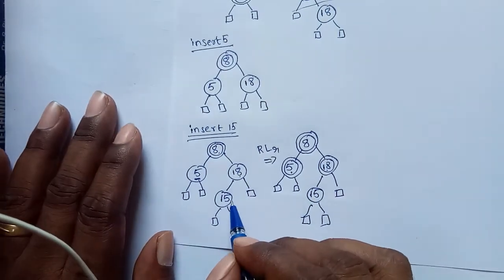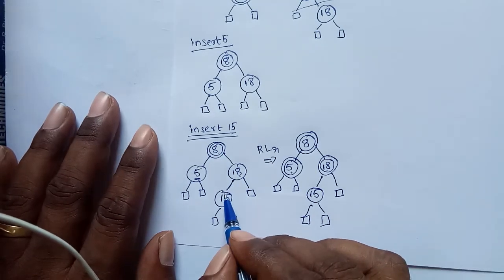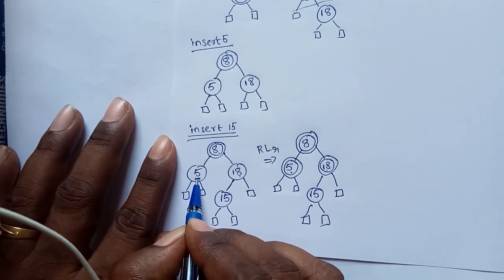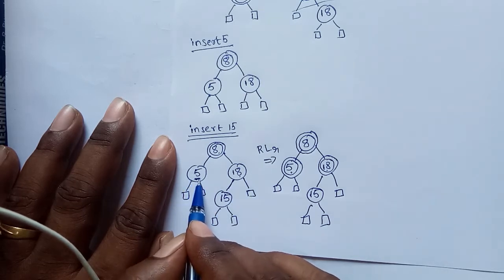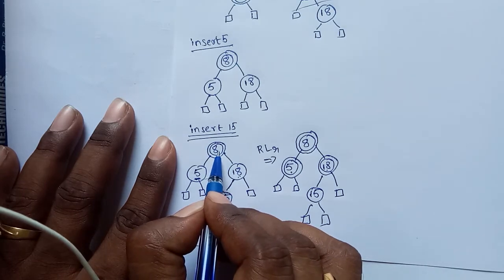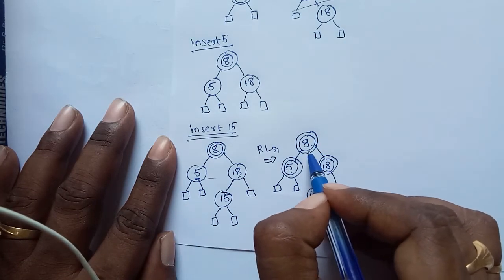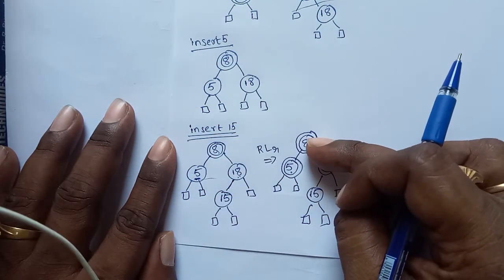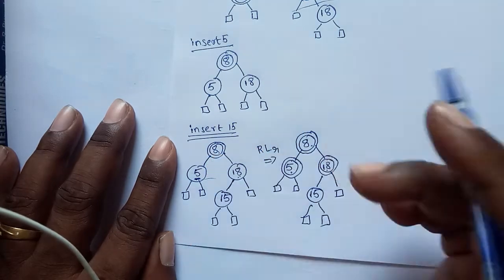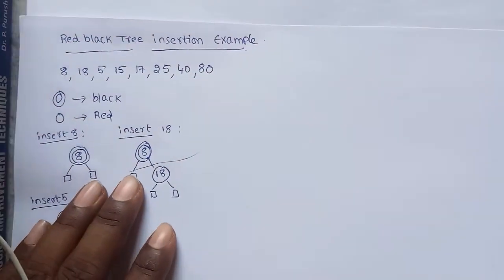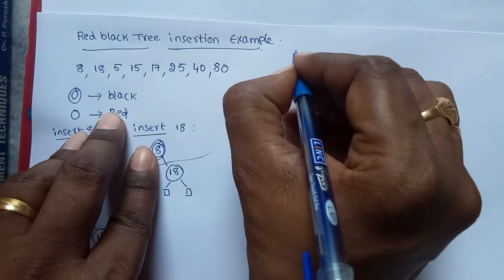To summarize: after insertion, if we have two consecutive red nodes, check the color of the uncle node. If the uncle node color is red, perform a recolor operation — parent colors (red) are converted to black, and the grandparent color (black) is converted to red. If this grandparent is the root, convert it back to black. Insertion of 15 is completed.